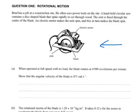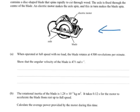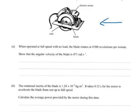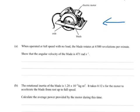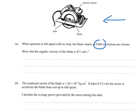Part A. When operated at full speed with no load, the blade rotates at 4,500 rpm. Show that the angular velocity of the blade, angular velocity remember it's omega, is 471 radians per second.